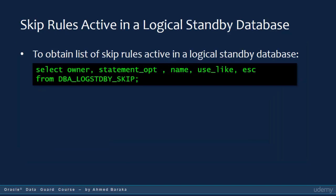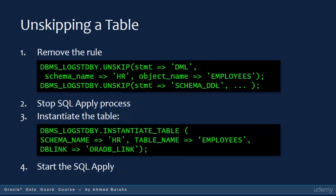If you want to know the skip rules that are active, query the DBA_LOGSTDBY_SKIP view. If you want to delete a skip rule, use the DBMS_LOGSTDBY.SKIP procedure as shown in the slide example. After that, you need to stop the SQL Apply process and then instantiate the affected table. This will recreate the table with all its data from the primary database. When the instantiation is done, you can start the SQL Apply service.